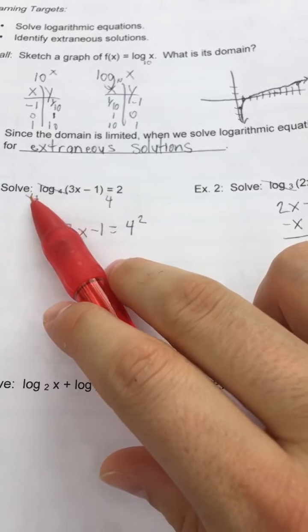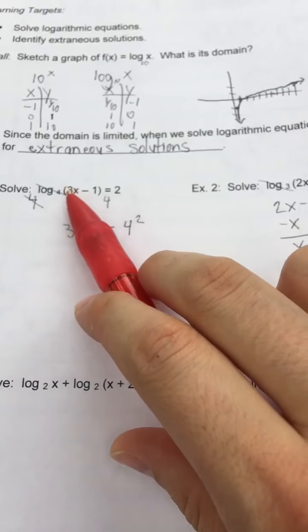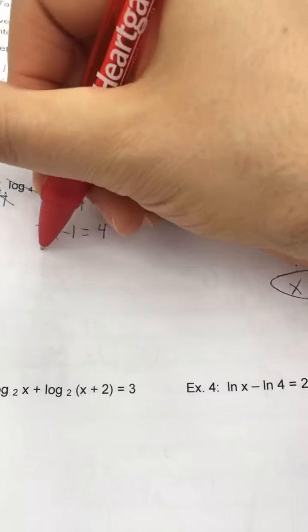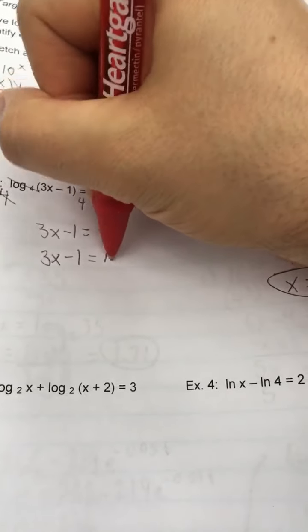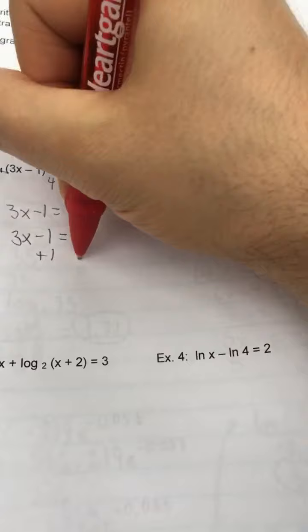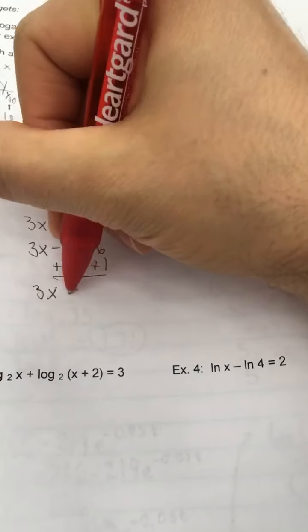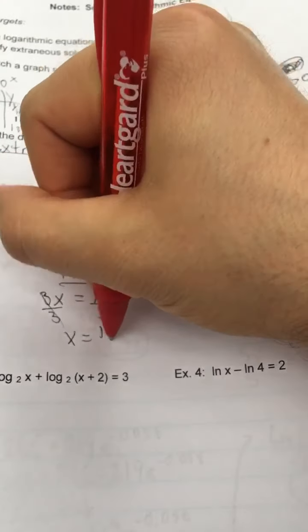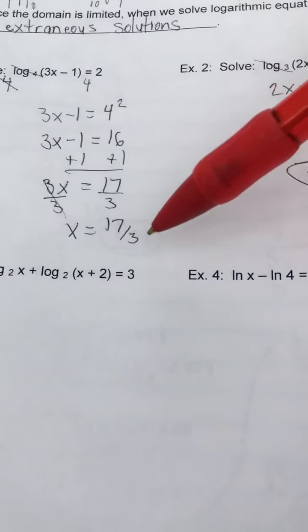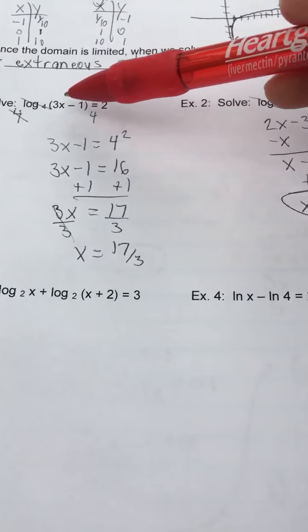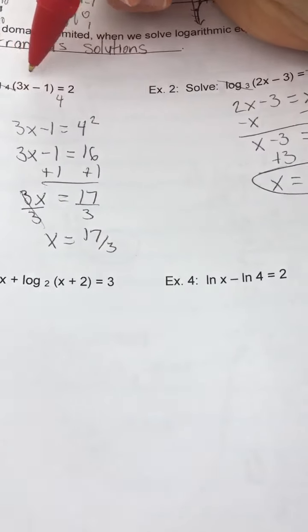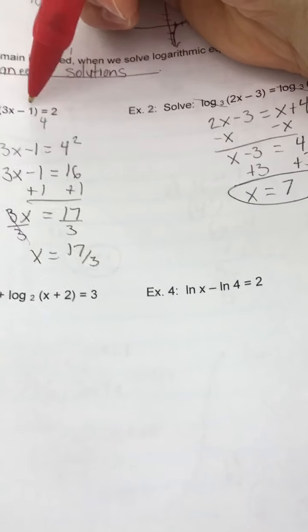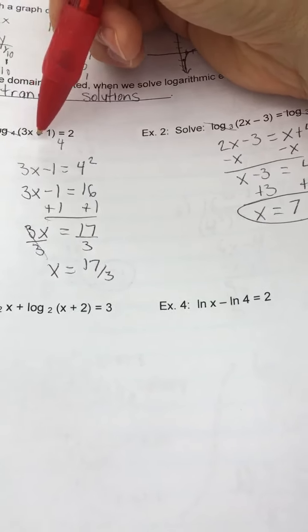So one more time, whatever the base is, I put that base on both sides and I make what's written in the original problem just the exponent. So now I'm going to solve that. Four squared is 16, three X minus one equals 16 and solve that equation. Add the one, three X equals 17 divided by three, X equals 17 thirds. And again, I just need to make sure when I'm plugging this in that I'm not getting a negative number or zero inside the log. So I'm just really checking this part of it. Three times 17 thirds, the threes cancel out. That just leaves me 17 minus one will give me 16, getting a positive answer right here. I'm okay.